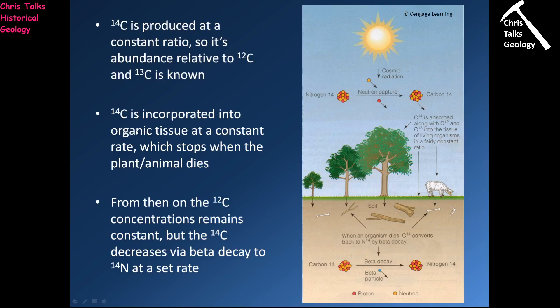As soon as you die, you stop eating, so you will no longer be adding new carbon-14 into your body. When a plant or animal dies, no more carbon-14 goes into the body. The carbon-14 that remains then breaks down to nitrogen-14 at a set rate. The great thing is that we know how much carbon-14 the body started with, and we can measure how much is left. So all we need to know is how long it takes to go from the starting amount to the measured amount — and since carbon-14 decays at a constant rate, that calculation gives us the age.